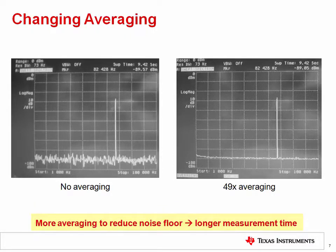In the examples above, you can see the results with no averaging on the left and the results with 49 times averaging on the right. Without averaging, the spectral density measurement shows significant variation. Using averaging, you get a more accurate overall result.